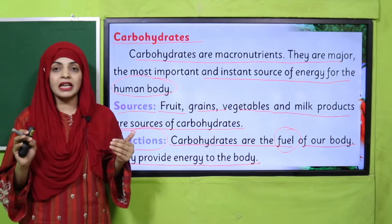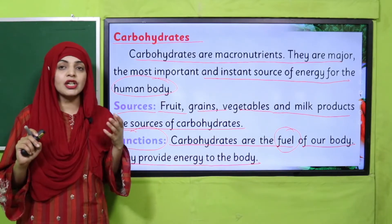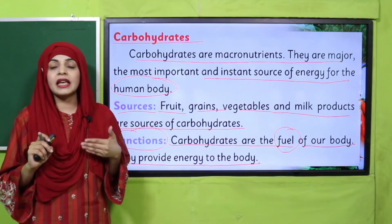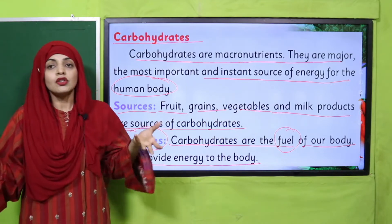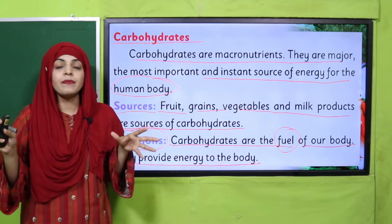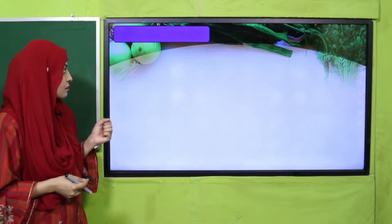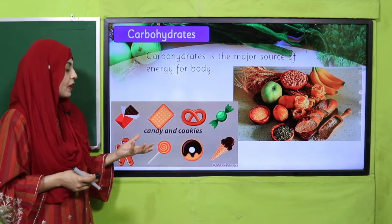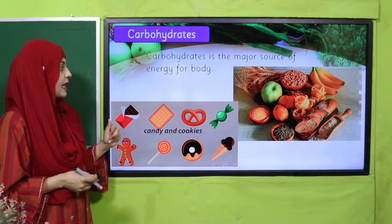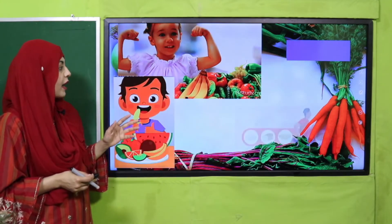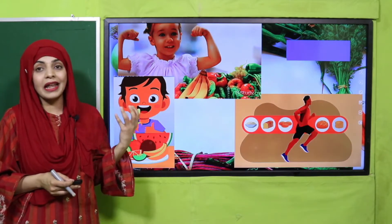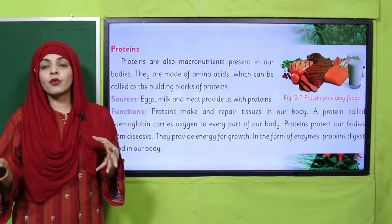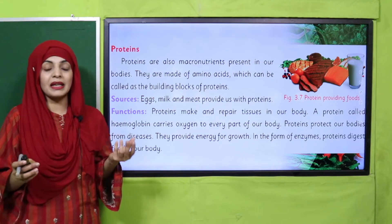You get carbohydrates from roti, rice, milk, and butter. Whichever foods contain carbohydrates, your body takes energy from them. Some junk foods also have carbohydrates. The function of carbohydrates is to keep yourself healthy and active and to perform the daily functions of life. Now let's move towards the next important nutrient: proteins.